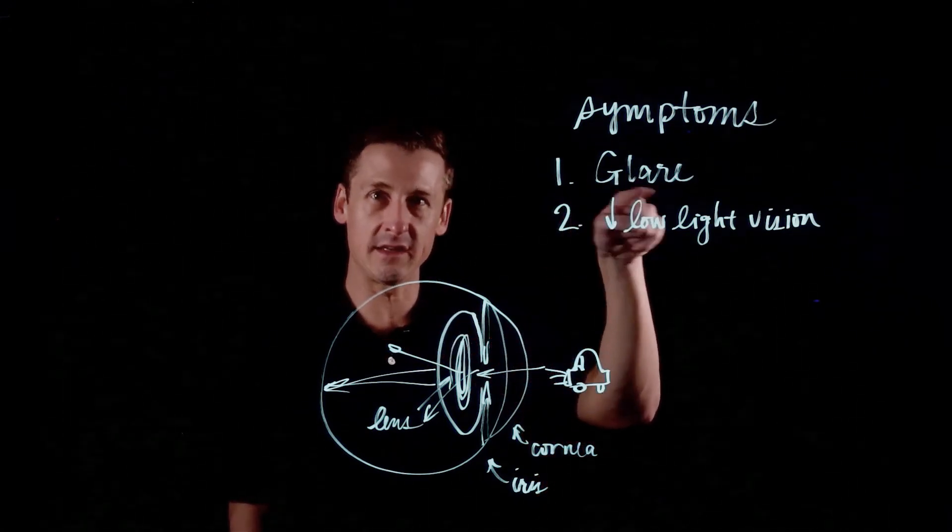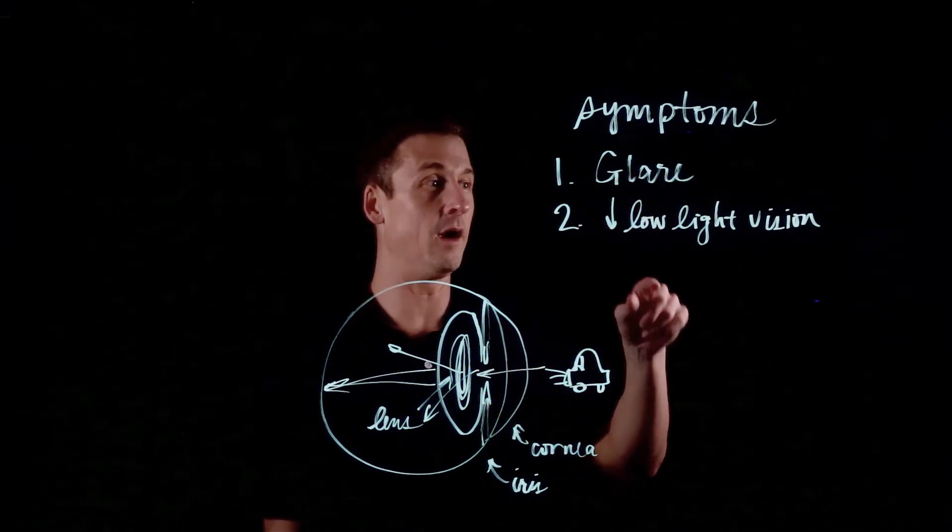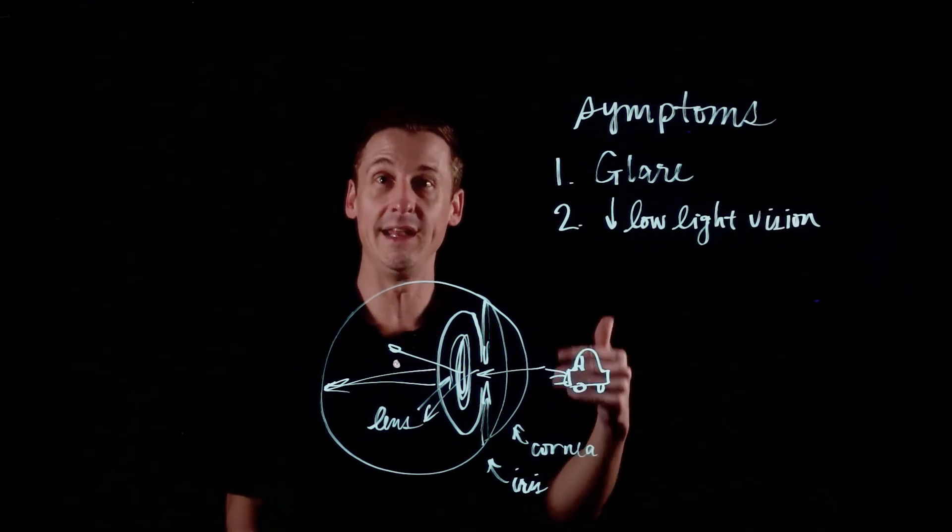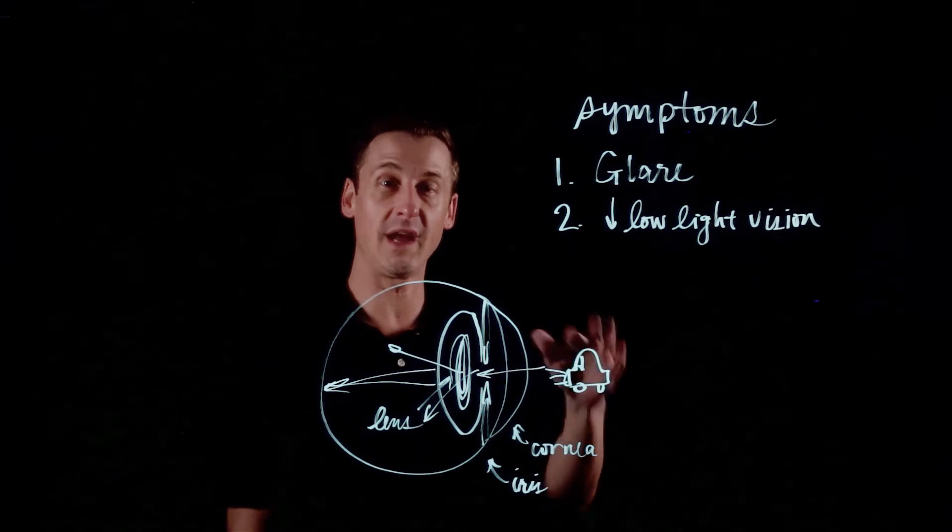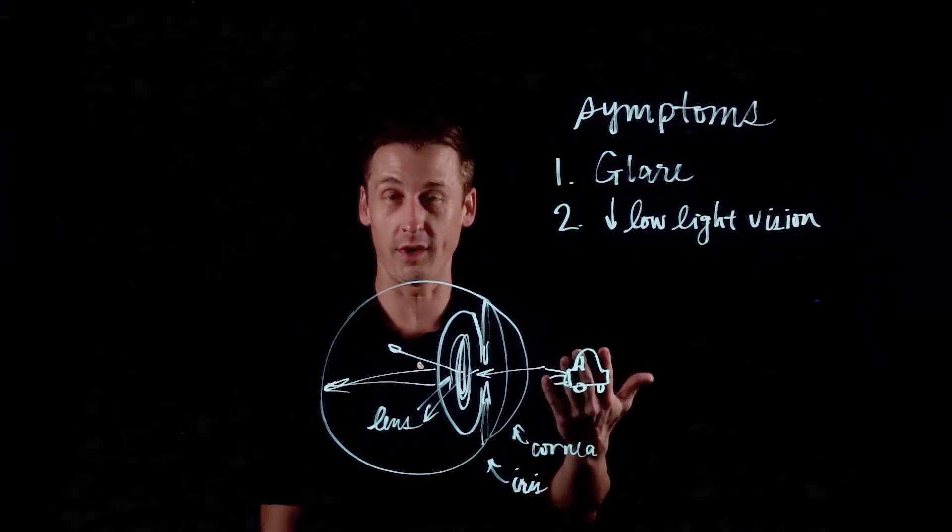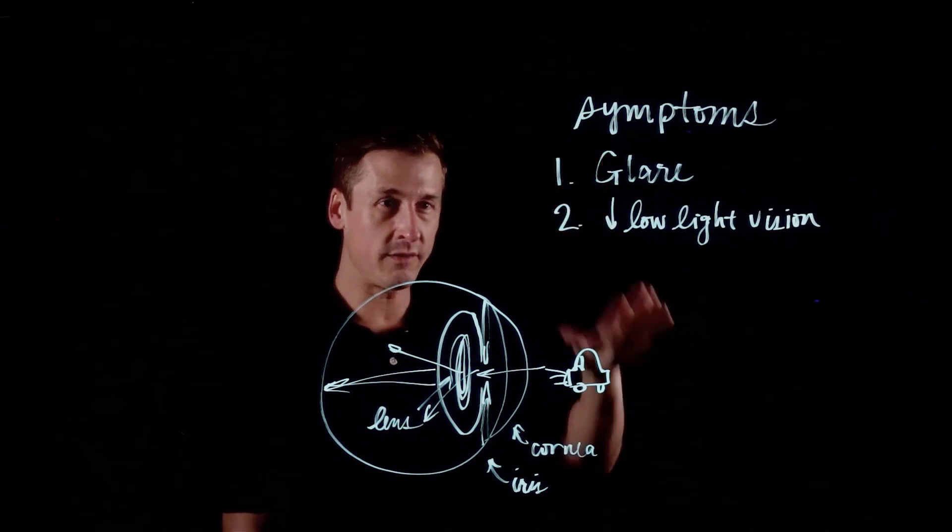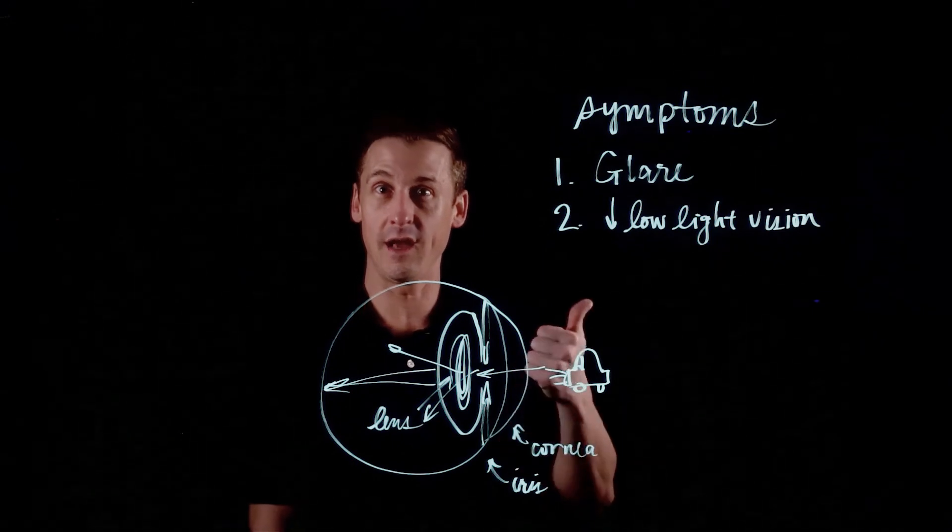But most people, if they've gotten to the point where they have glare, and sometimes even before they have glare, will have this difficulty with low light vision. And that is not necessarily with point sources of light, but with light that you're having to see that is shined off of a page on a book. And that's because the amount of light that you need to push into the back of your eye has to get higher and higher and higher.